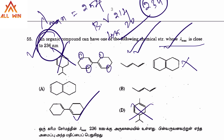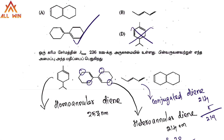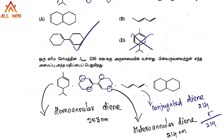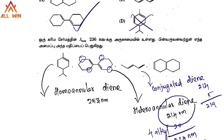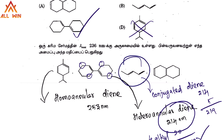Option C is the correct answer, with a calculated lambda max of 234 nm — very close to 236 nm. For comparison, the acyclic diene base value is also 214 nm, with one alkyl substituent contributing 5 nm, giving approximately 219 nm — much further from 236 nm.